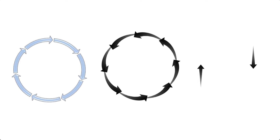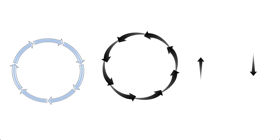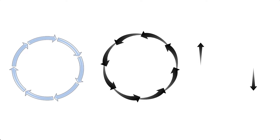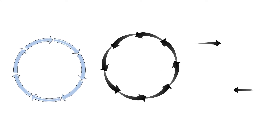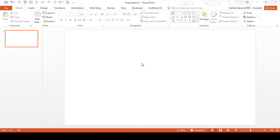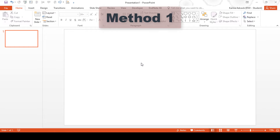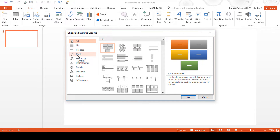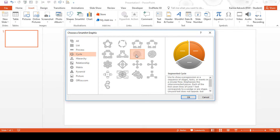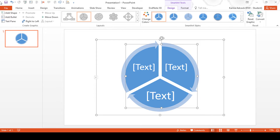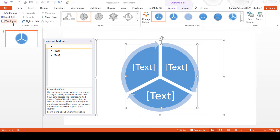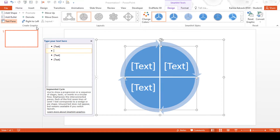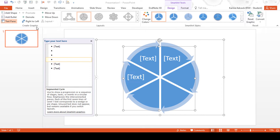In this video I'm going to be showing you three methods for making rotating arrow animations in PowerPoint. For the first method you need to go to Insert and then SmartArt, then select Cycle, then select Segmented Cycle and click OK. Then open up the text pane and add in bullet points to increase the number of arrows.